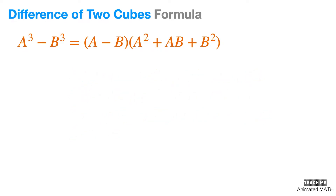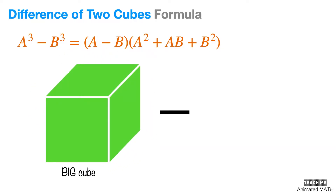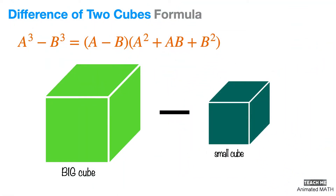We will literally find the difference between the volume of a big cube and a small cube. Take note that all sides of the big cube are equal to A, and all sides of the small cube are equal to B.